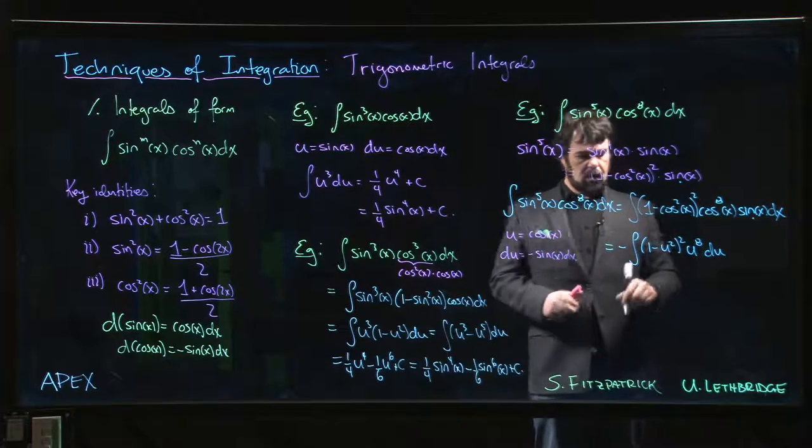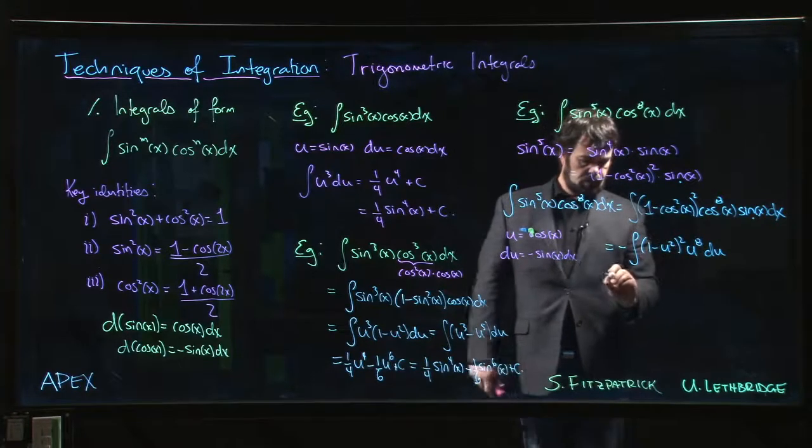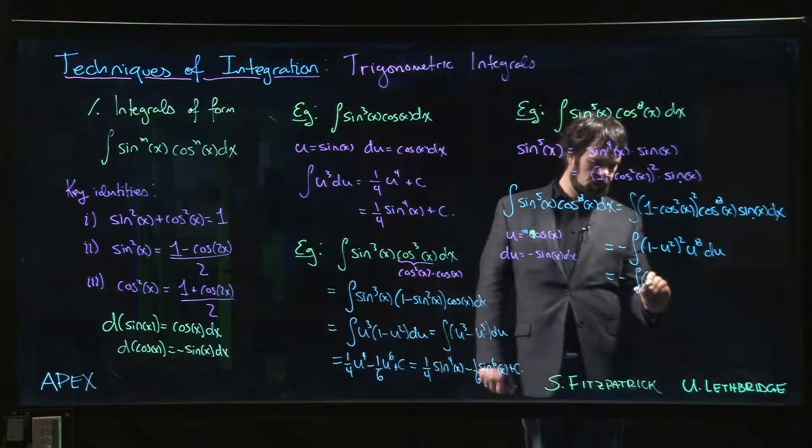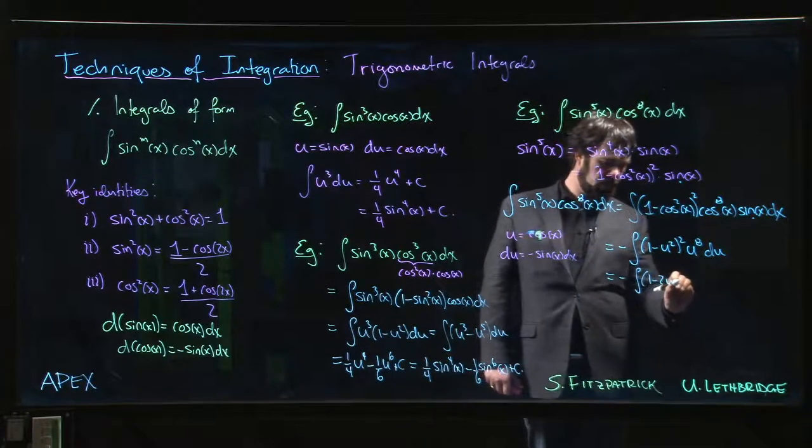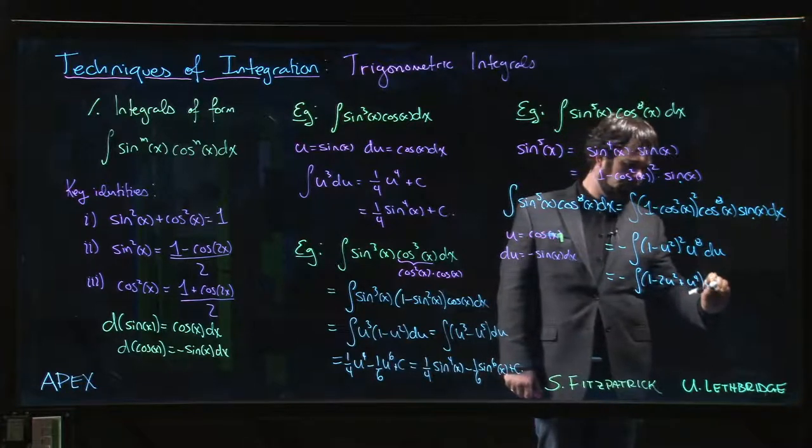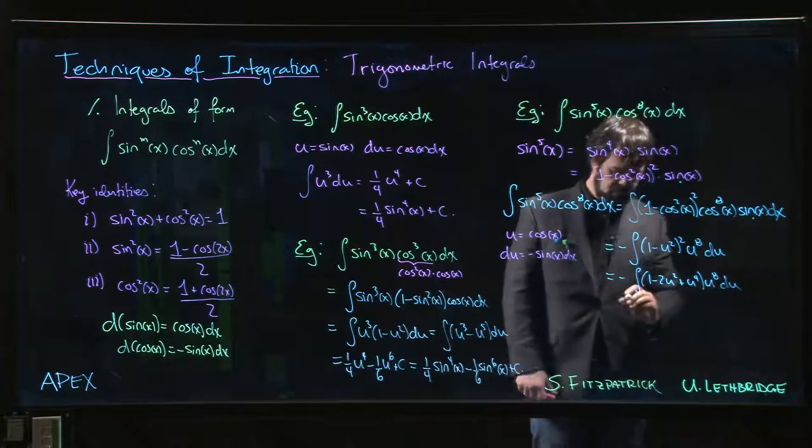Easiest way to deal with this square is just multiply it out: (1 - 2u² + u⁴) times u⁸. Multiply that power through.